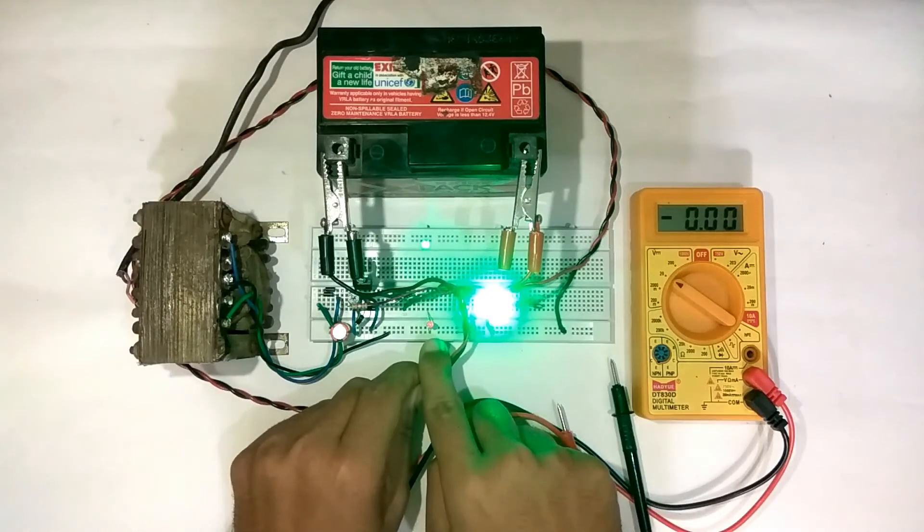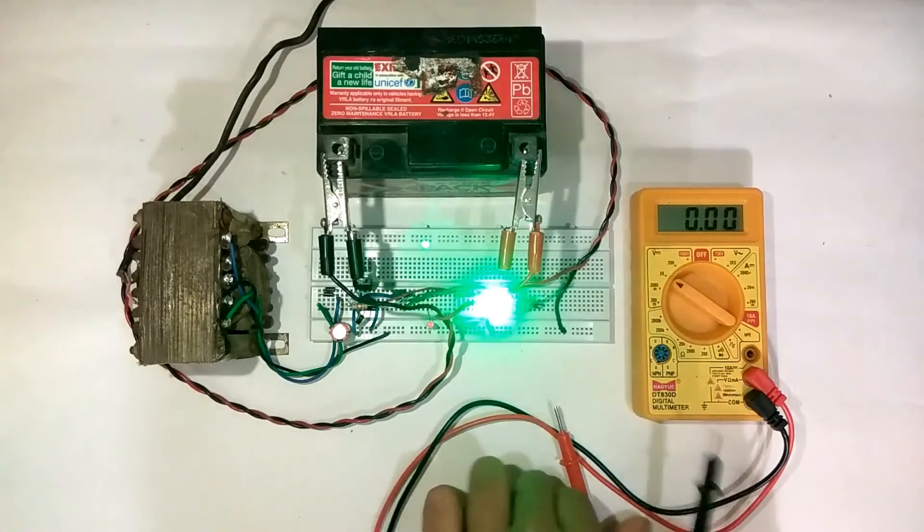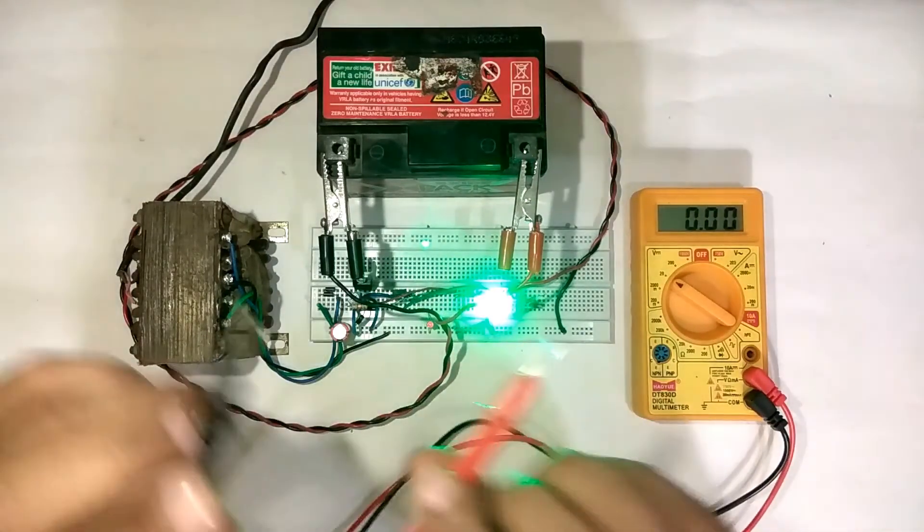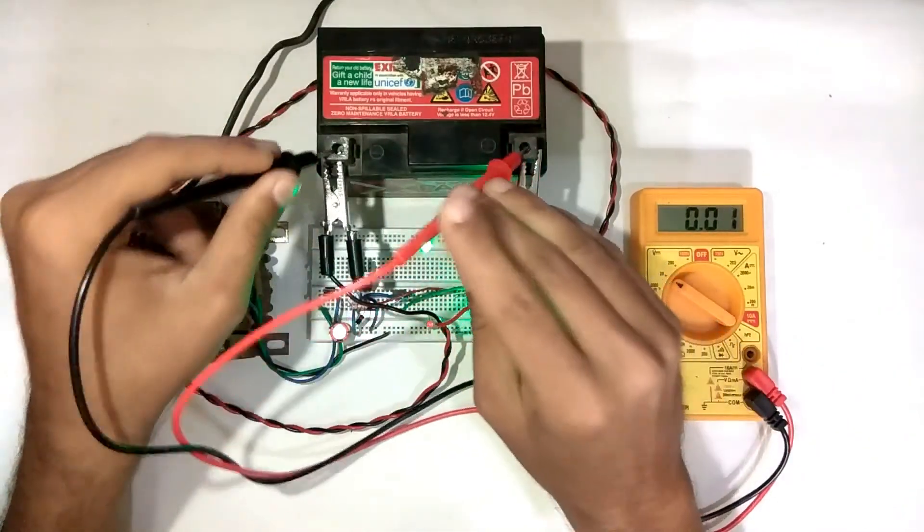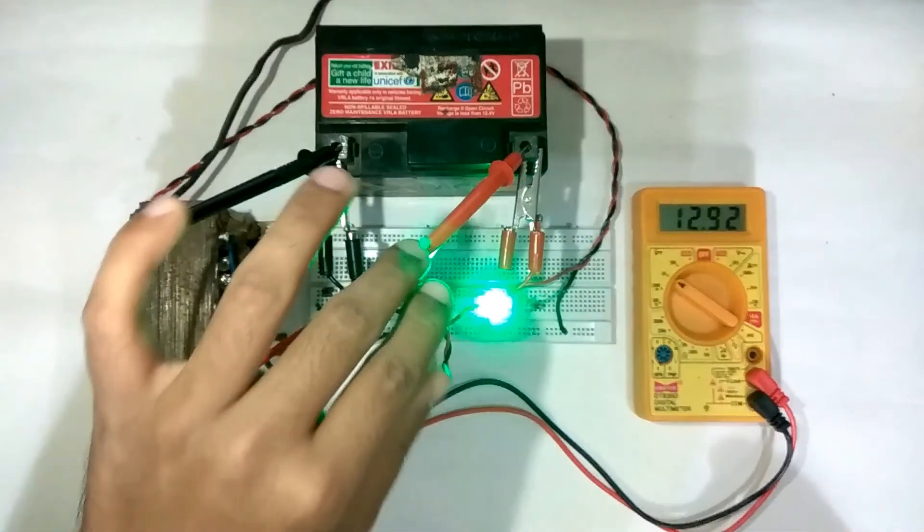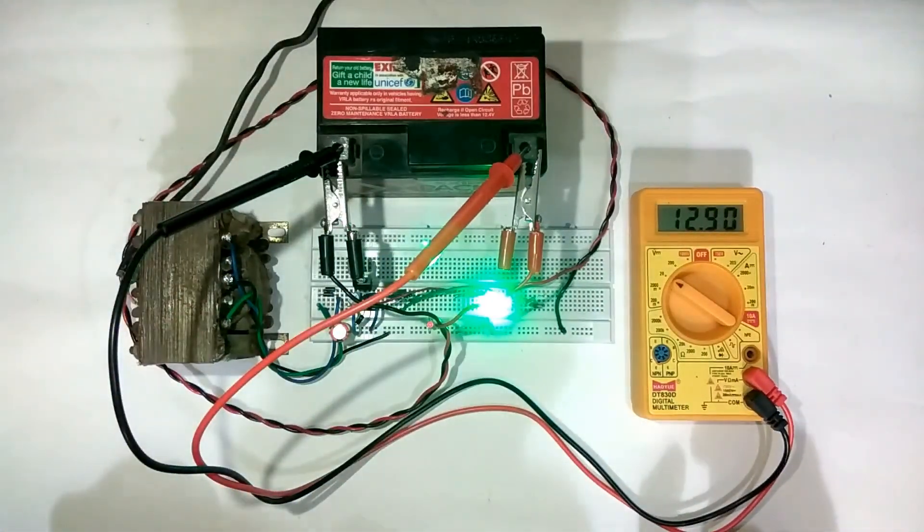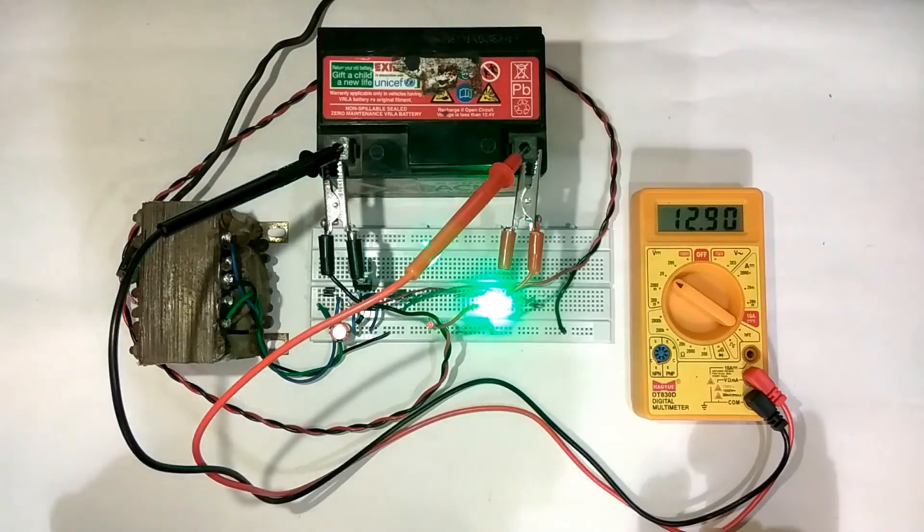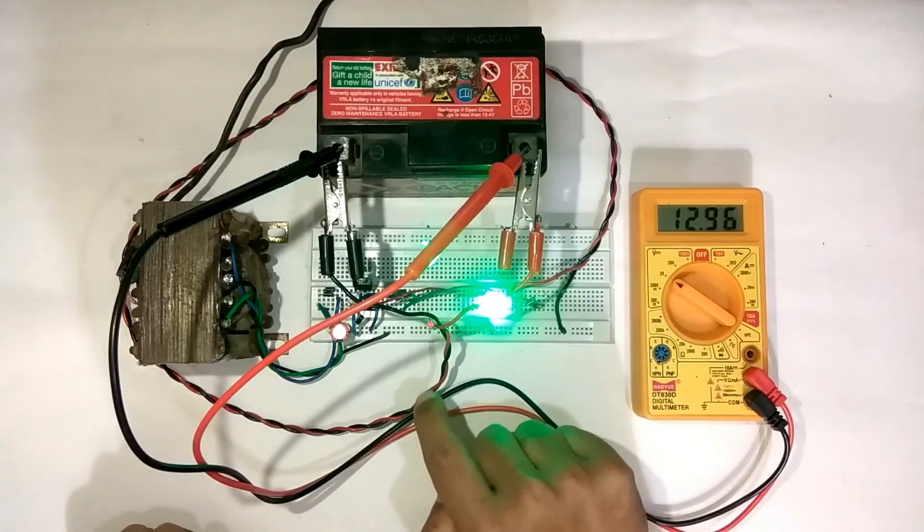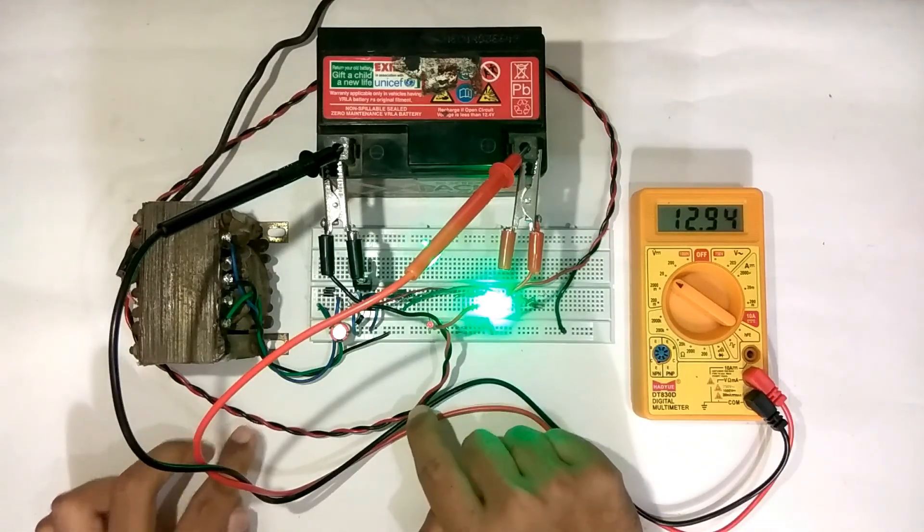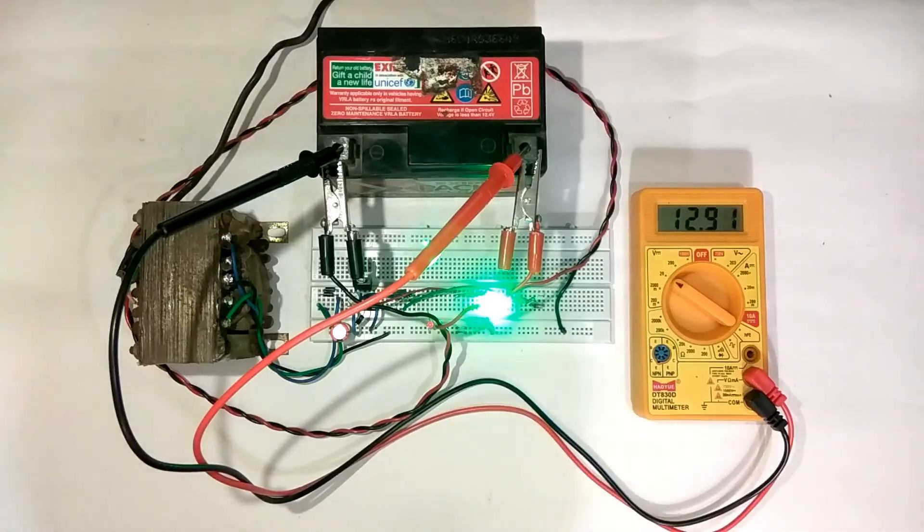And if you connect the multimeter probes to the battery terminal then you can see it's almost 13 volts. And when the battery voltage reaches 13.5 volts, the red LED will go with its full brightness again. Thank you.